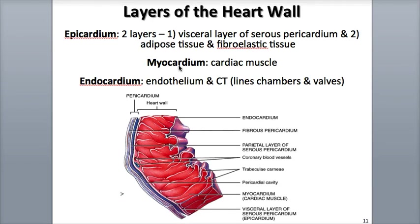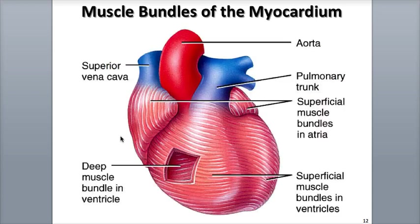The myocardium is the middle layer — think M is in the middle — that consists of cardiac muscle tissue. This is the layer of the heart wall that is acting as the pump, contracting the heart and helping to pump blood. About 95% of the heart wall consists of myocardium. The cardiac muscle fibers are organized in bundles and surrounded with connective tissue coverings similar to skeletal muscle tissue. These bundles are also arranged in superficial and deep layers that diagonally swirl around the heart, helping to pump blood in a specific one-way direction.